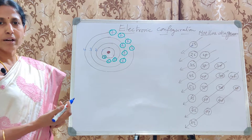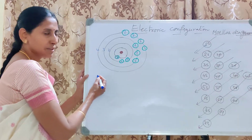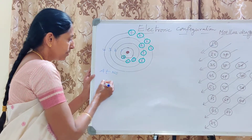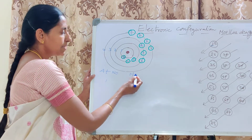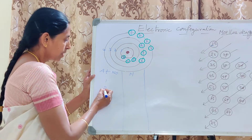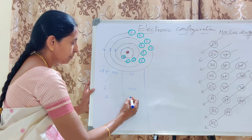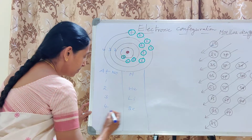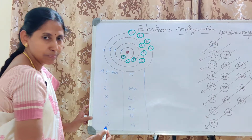Let us start with the very first elements. Atomic number 1 is Hydrogen, symbol H. Atomic number 2 is Helium. Atomic number 3 is Lithium. Number 4 is Beryllium. Number 5 is Boron. Number 6 is Carbon.